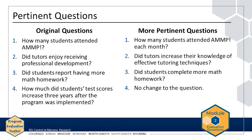After reviewing the draft evaluation questions against the pertinent criterion, the AMP evaluation team revises the questions. The team looks at question 1 and realizes that the total number of attendees won't tell the team what it wants to know; it will be more important to know attendance for each month of the program. For question 2, the team decides that tutors' knowledge of effective techniques is more important than their enjoyment of professional development. For question 3, the team decides it cares more about whether students completed more homework than whether they had more homework. Finally, the team decides that question 4 is already pertinent and does not revise it.